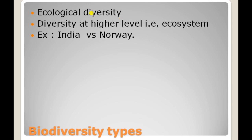Ecological diversity is diversity at a higher level — the ecosystem level. For example, India contains a variety of ecosystems such as deserts, croplands, rainforests, deciduous forests, and swamps. In contrast, Norway has only a few ecosystems, which is why ecological diversity is greater in India than in Norway.